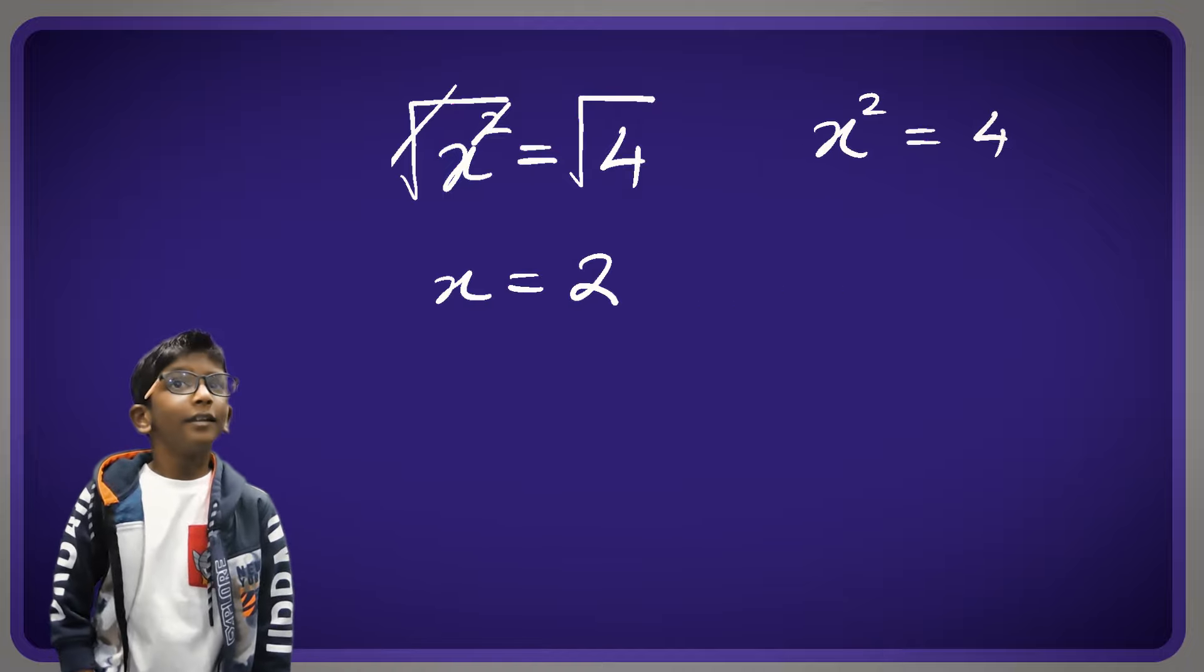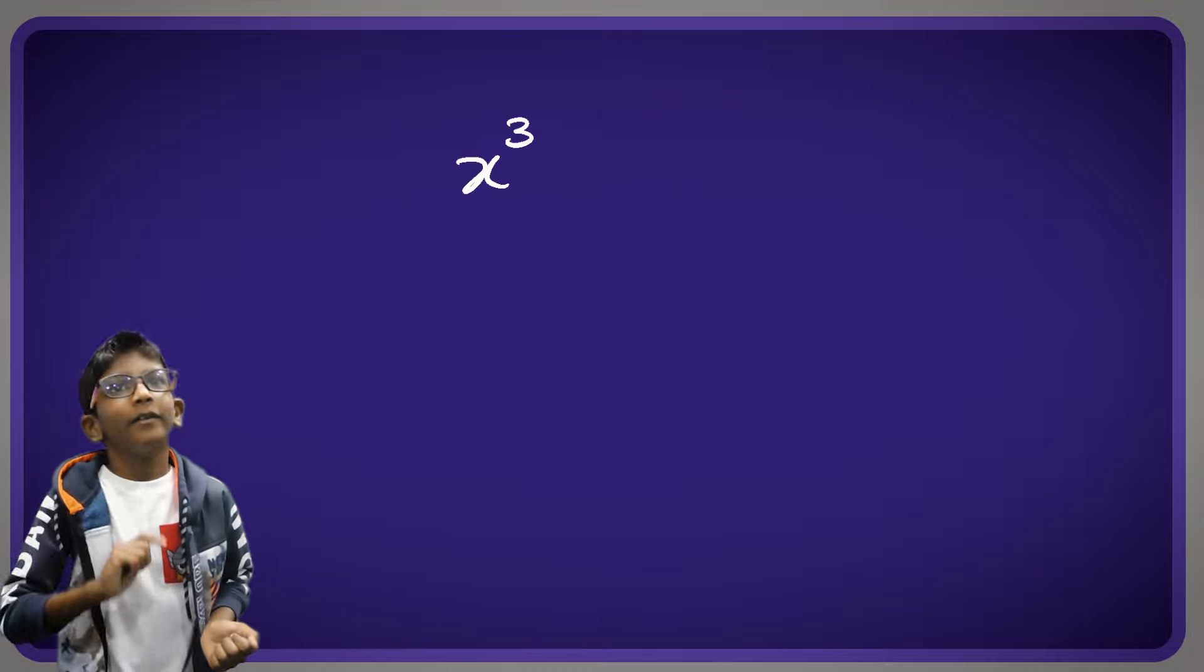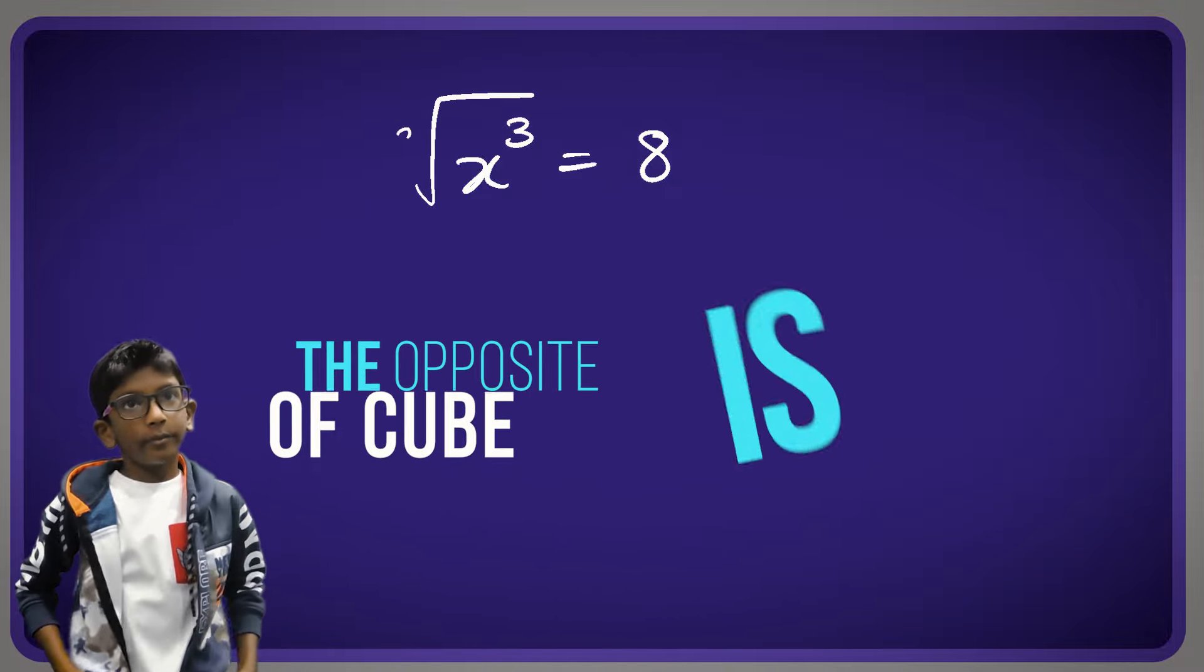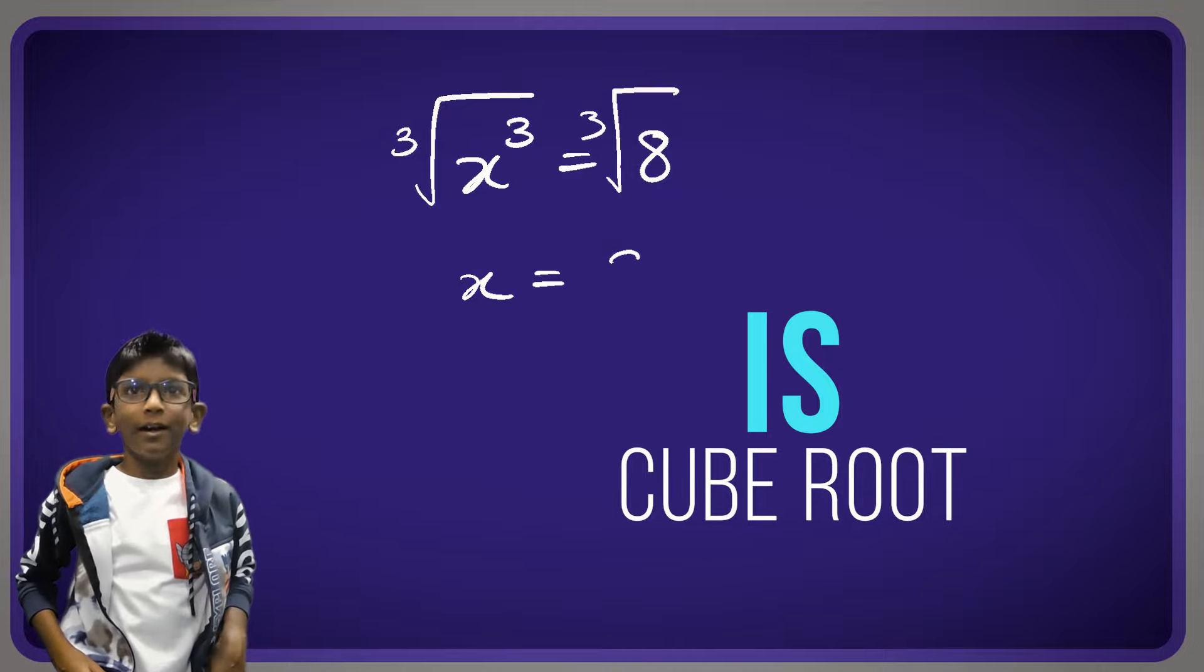And the square never went to the other side. So now we have x to the power of 3 equals 8. We do the cube root on both sides, they cancel, and we get x equals 2 again.